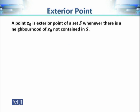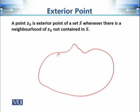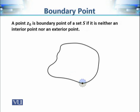If a point is not interior, it may be an exterior point. A point z₀ is called an exterior point of S if there exists a neighborhood of z₀ that does not intersect S — in other words, the neighborhood is entirely outside S.